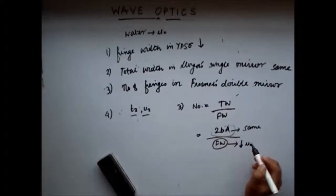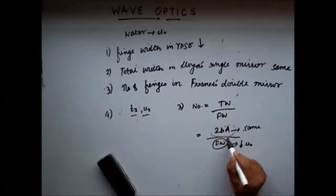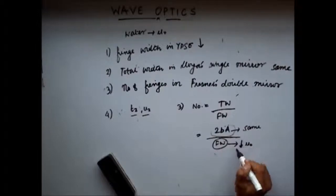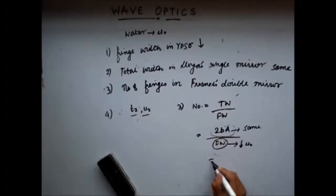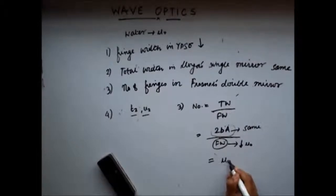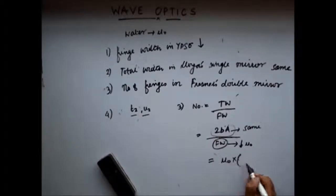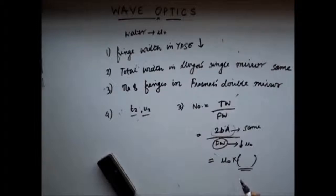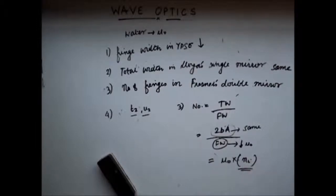Since the denominator decreases by a factor of mu naught, the whole quantity increases by a factor of mu naught. So the number of fringes increases by a factor of mu naught — that is, mu naught times the initial number of fringes.